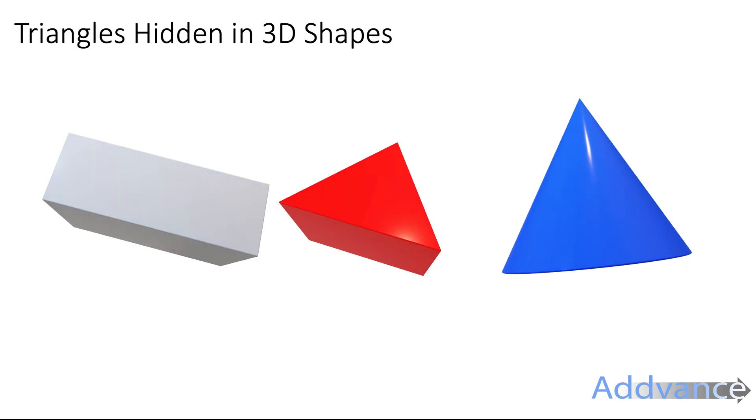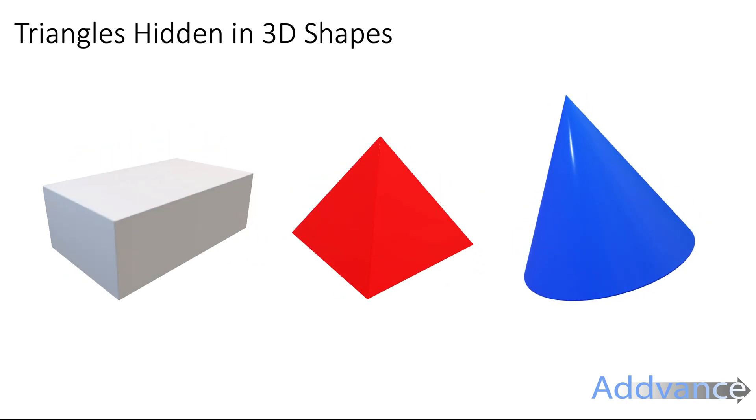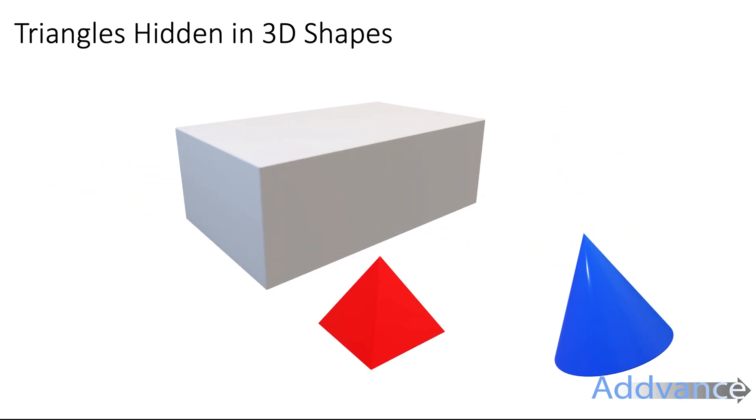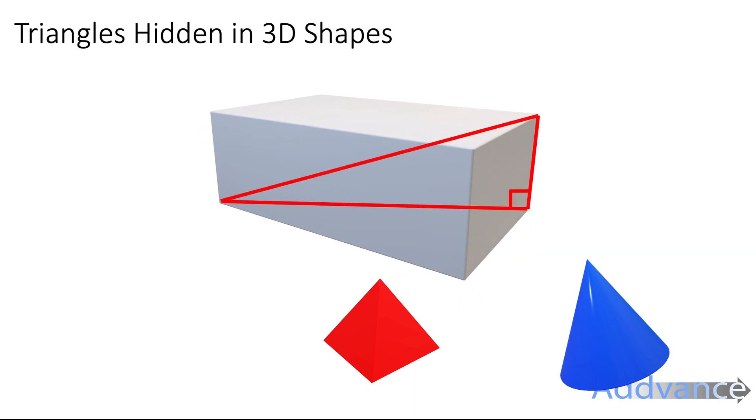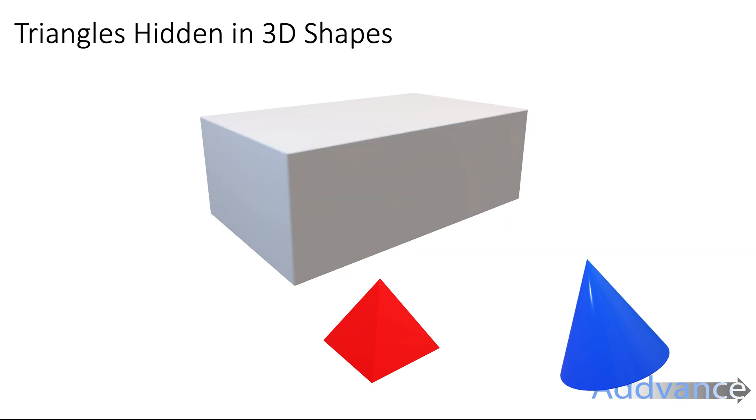Now we've got some 3D shapes here, and I'm going to try and show you some of the triangles that are hidden inside these shapes. So take the cube first, cuboid, and it's got a triangle here, and that's a right-angled triangle. Got another right-angled triangle here between these 3 corners. And then we've got this triangle here hidden between those 3 corners again. And this angle here will be a right-angle.